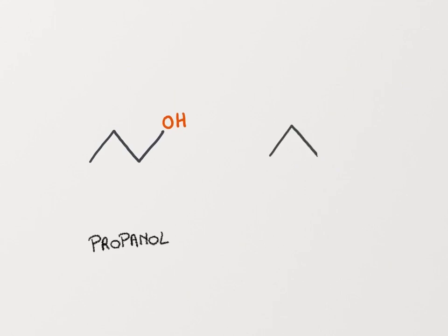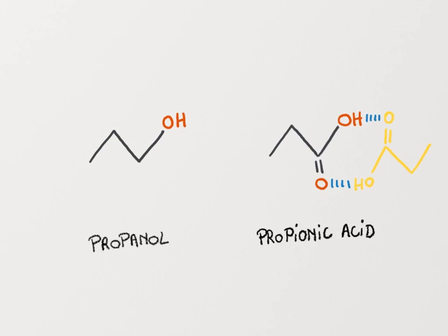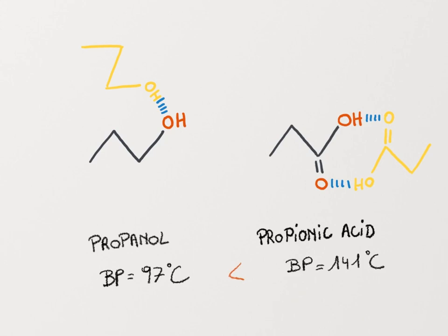In a last example, we can compare propanol and propionic acid, which again can both form hydrogen bonds. The functional groups of these molecules all have oxygen atoms in them, so there's no use in looking at the electronegativity differences. The difference in boiling point here is due to the total number of acceptors and donors that each molecule has. Propionic acid has the carbonyl group in addition to the hydroxyl group, and thus has extra hydrogen bond acceptor groups compared to propanol. As a result, propionic acid can form more hydrogen bonds per molecule and has a higher boiling point.